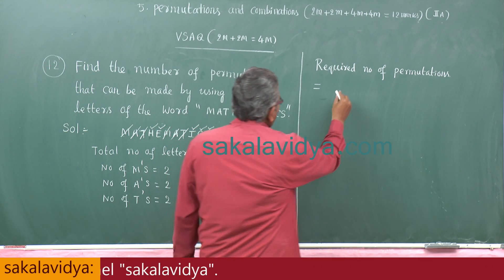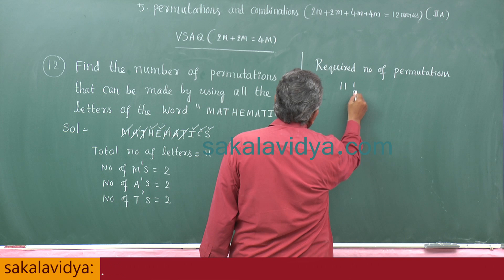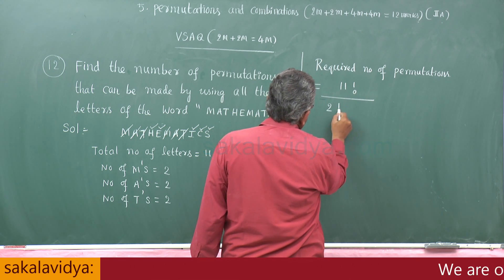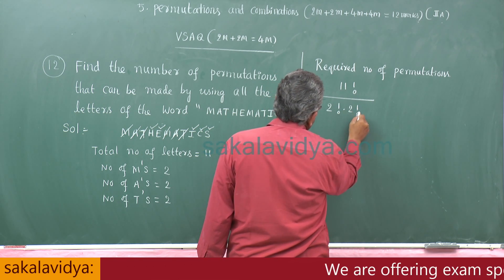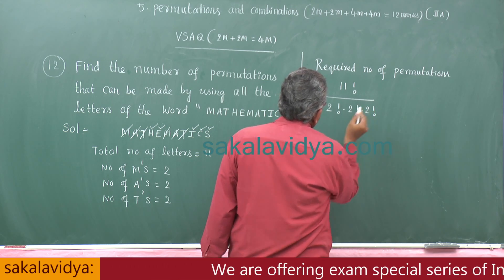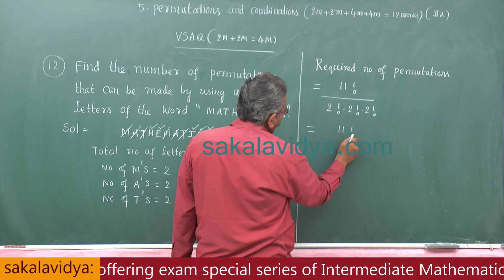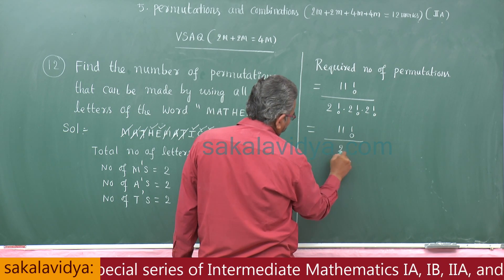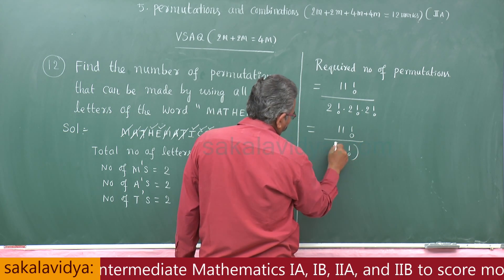That means we can write it as 11 factorial divided by 2 factorial into 2 factorial into 2 factorial, which can be written as 11 factorial by (2 factorial) cubed.